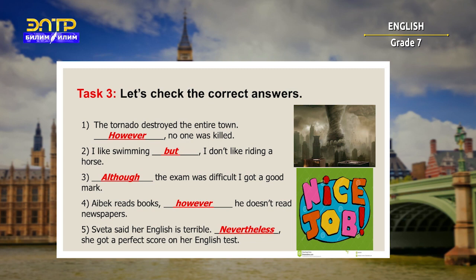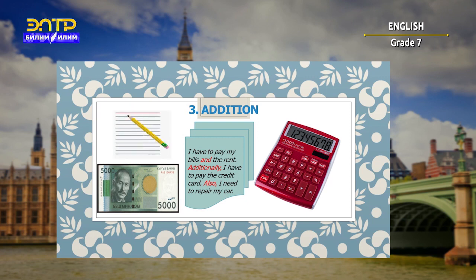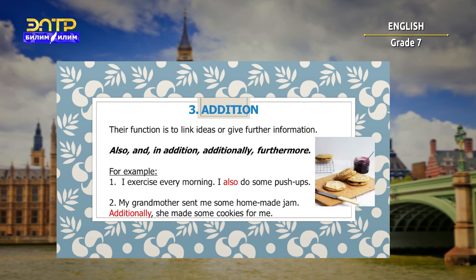Nice job, everyone! We also have addition linking words. For example: I have to pay my bills and the rent. Additionally, I have to pay the credit card. Also, I need to repay my car loan. The function of addition linking words is to link ideas or give further information. The linking words include: also, and, in addition, additionally, furthermore.